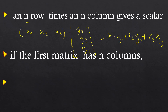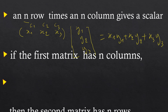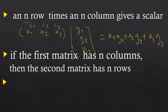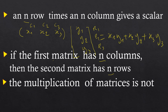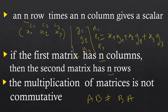If the first matrix has N columns — for example, three columns: column 1, column 2, column 3 — then the second matrix must have N rows: R1, R2, and R3. N columns matched with N rows. The multiplication of matrices is not commutative, as we have seen in the example: A times B is in general different from B times A.